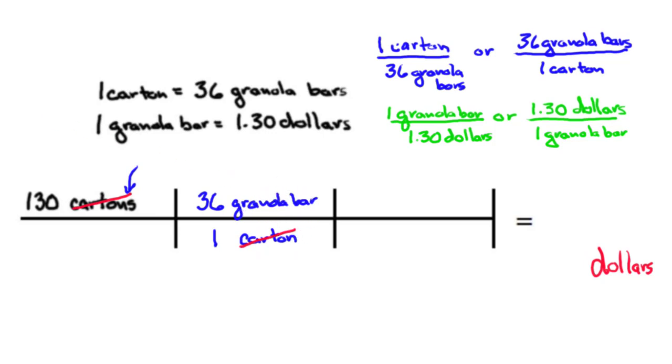But I'm not done yet. I still want dollars, and here's a conversion factor that's going to allow me to go from granola bars to dollars. In this conversion factor dollars is on the bottom, but I see that granola bars is there, so I'm going to pick this one: 1.30 dollars for every one granola bar.